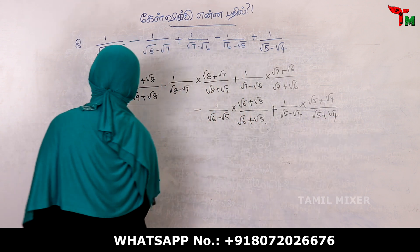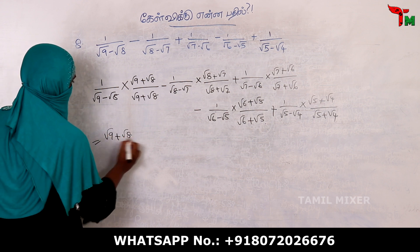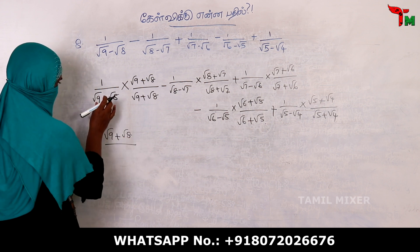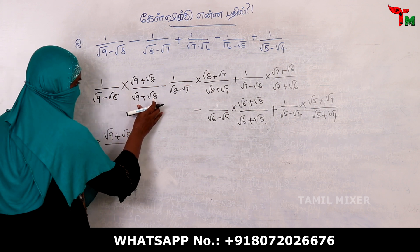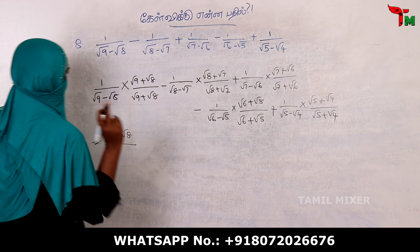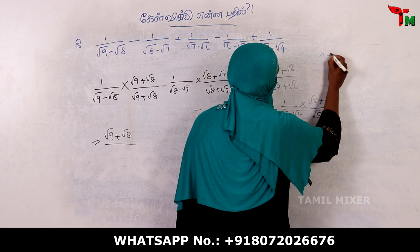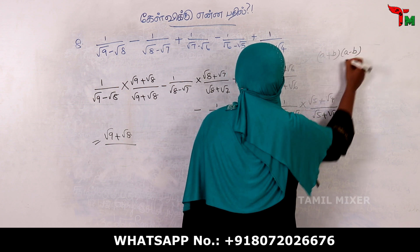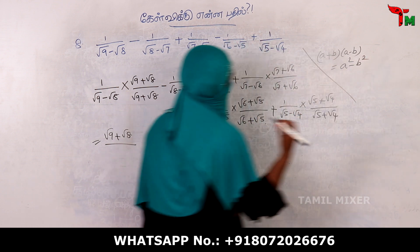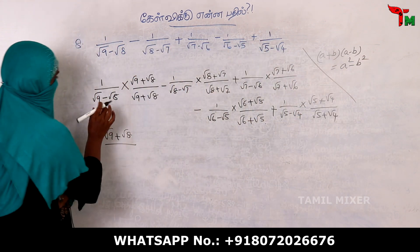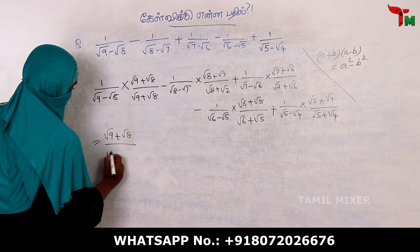Now we will do the next step. We apply the formula: a plus b times a minus b is equal to a squared minus b squared. So we use this formula to simplify each denominator.